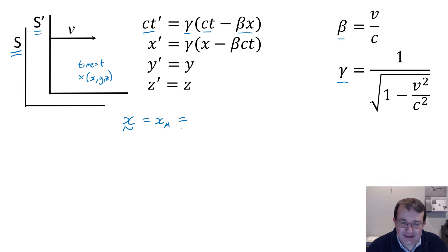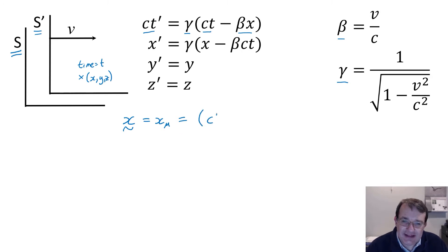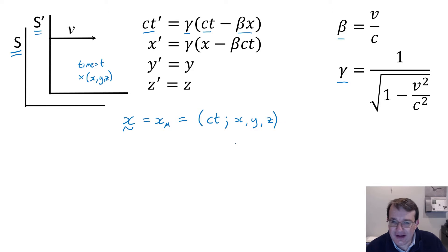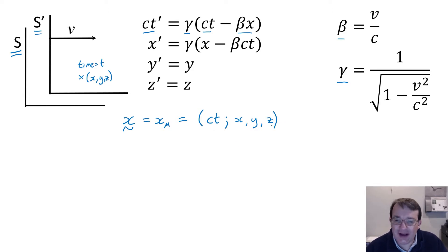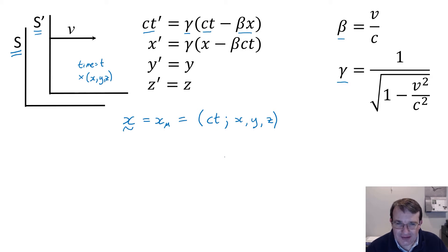We define this four-vector as c times t — we'll write a semicolon there — and then x, y, and z. So this is a four-component vector which contains both the time coordinate and the x, y, and z coordinates.